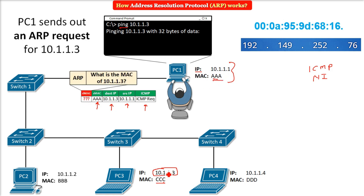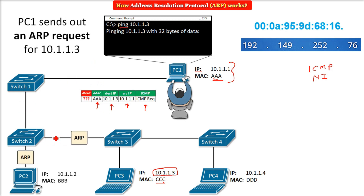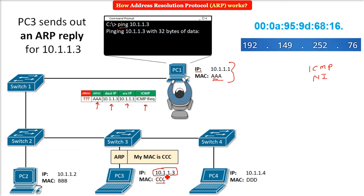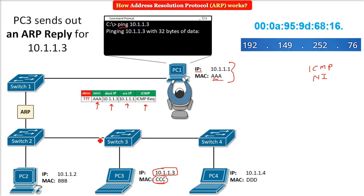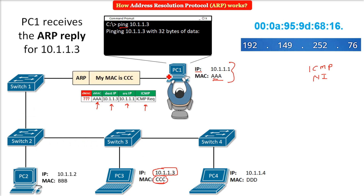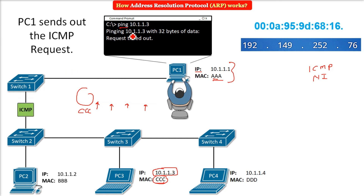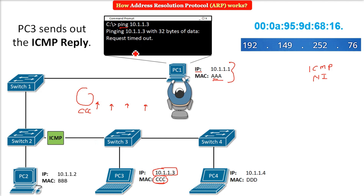Here comes ARP. ARP will ask: whose IP is this — please give me the MAC address. This ARP request goes to every system as a broadcast message. These other systems will discard it, but 10.1.1.3 will say: this is my IP, so I will give you my MAC. MAC CCC goes back as an ARP reply, and that reply gets embedded inside the ICMP packet, and then the rest of the communication process continues.